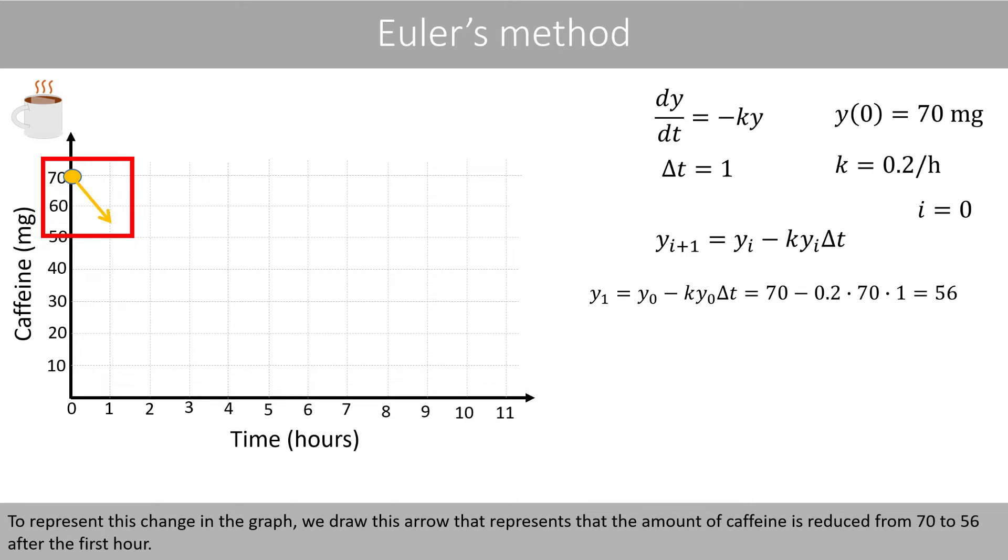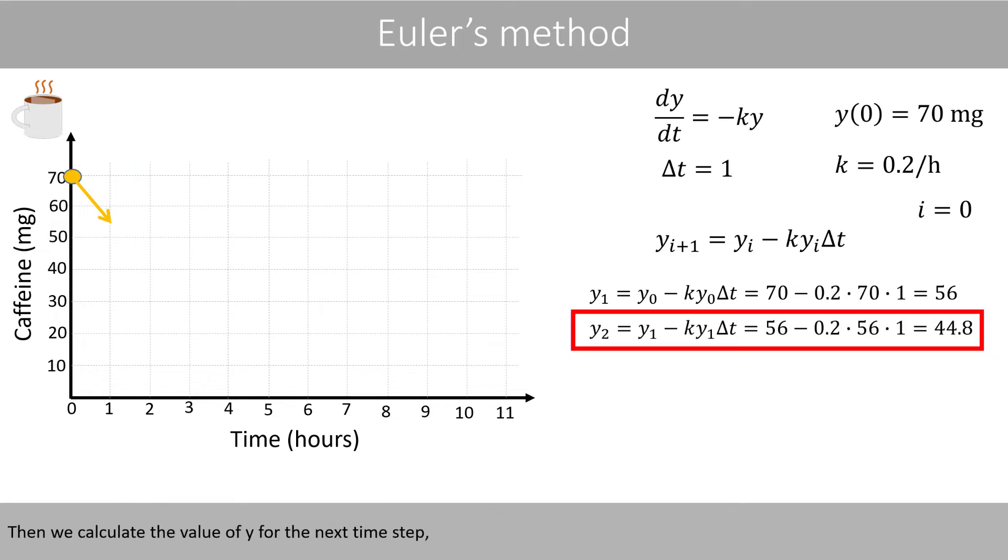To represent this change in the graph, we draw this arrow that represents that the amount of caffeine is reduced from 70 to 56 after the first hour. Then we calculate the value of y for the next time step, where we see that the value of y decreases from 56 to 44.8.